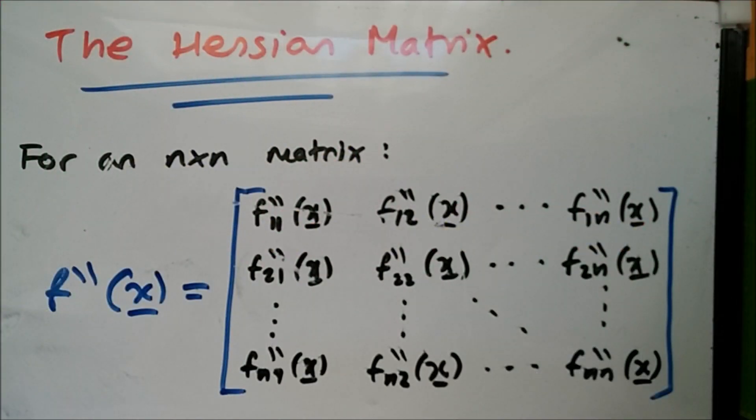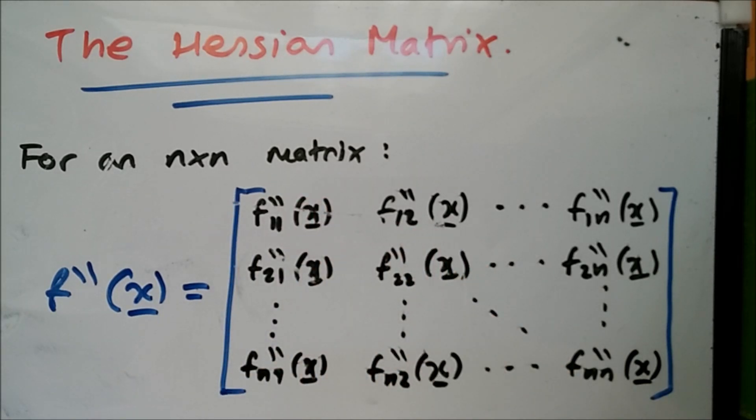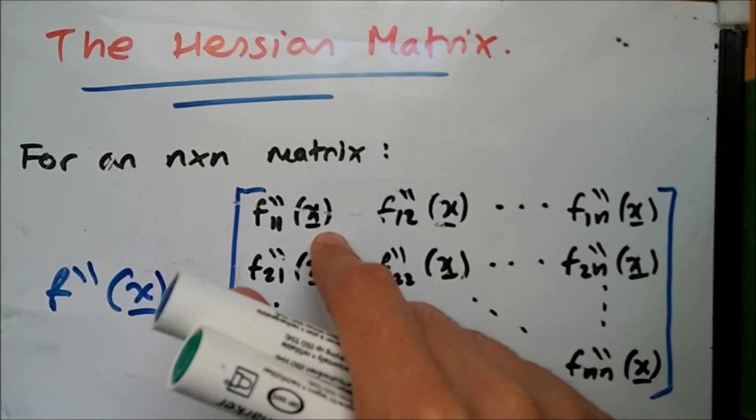Hello guys, welcome back to another video. In this one we'll be looking at the Hessian matrix. The Hessian matrix computes the second partial derivatives for any given independent variable, up to xn terms.